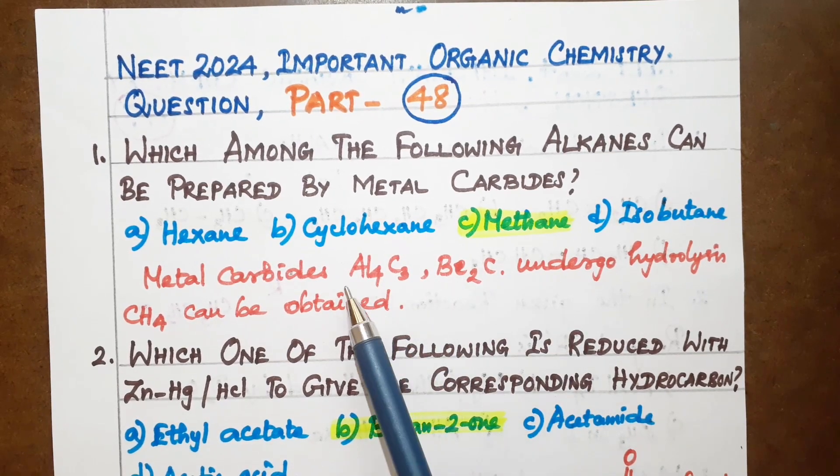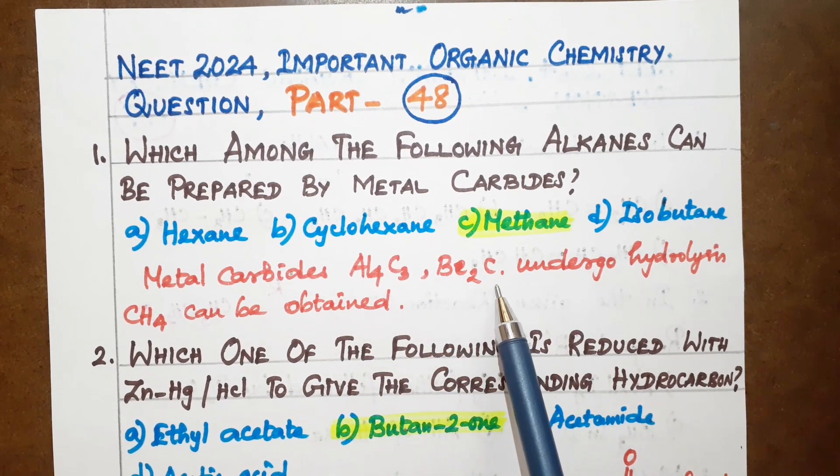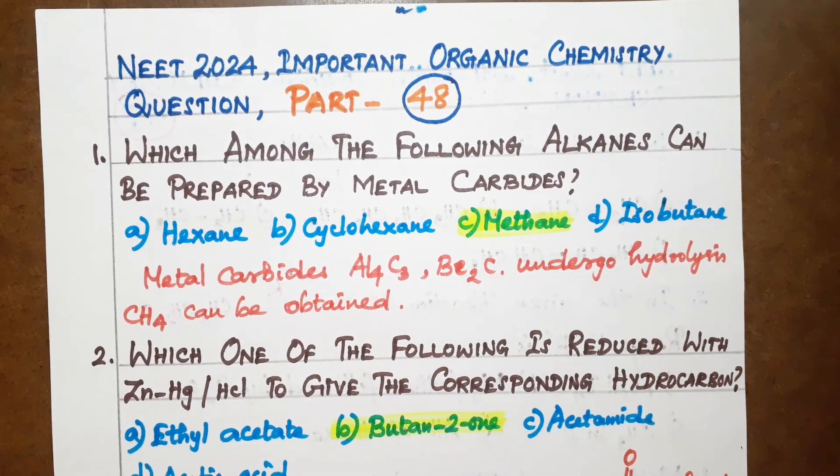Methane can be prepared from all metal carbides, that is aluminum carbide and beryllium carbide. So option C is the correct answer.